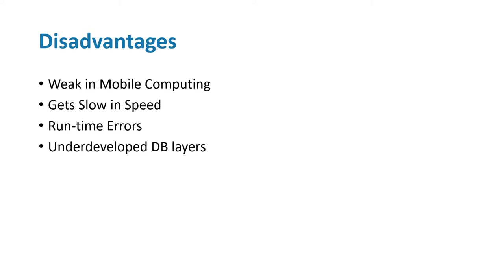Now let's look at the disadvantages of Python. Any programming language has its own pros and cons. First, Python is weak in mobile computing - it is not much used in the mobile computing area and needs improvement there. Python also gets slow in speed. A lot of people have the misconception that Python runs faster than Java and other programming languages, but the actual fact is it is slower when compared to Java, C, or C++.